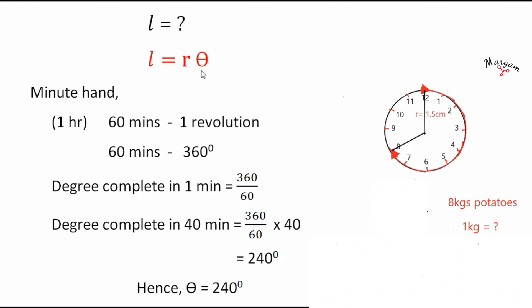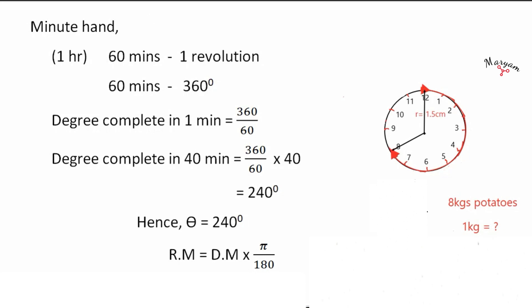But to use this relation l equals r into theta, we always need theta in radians. For that, let's convert this 240 degrees into radians. For that what you do is simply multiply a degree measure by pi by 180.